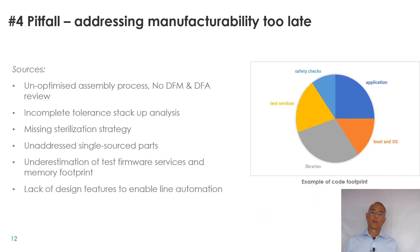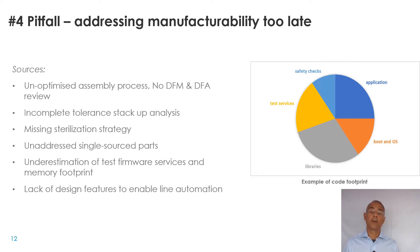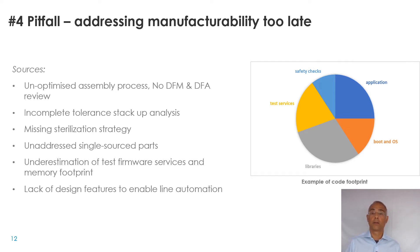Pitfall number four: addressing manufacturing requirements too late. From the earliest days of design, you need to focus on how the device will be assembled — ideally in an automated way — how it will be tested and calibrated given the small form factor, and the sterilization strategy, which may exclude certain methods due to the presence of electronics. You also need to plan for all the software needed to calibrate and operate the device in the factory, which can absorb up to one third of the entire memory footprint and may require adopting a more expensive silicon with wider memory.